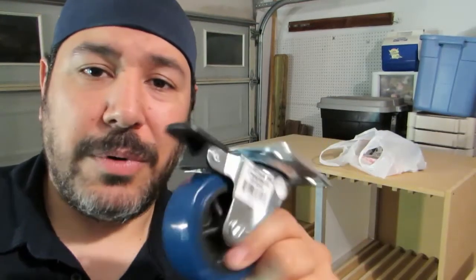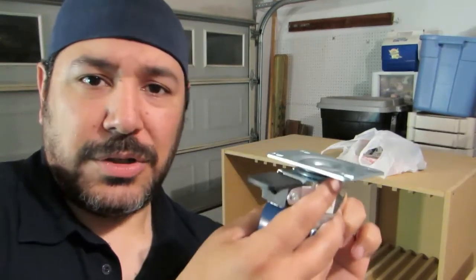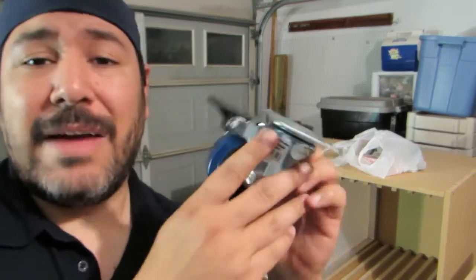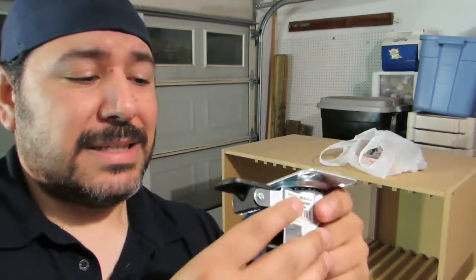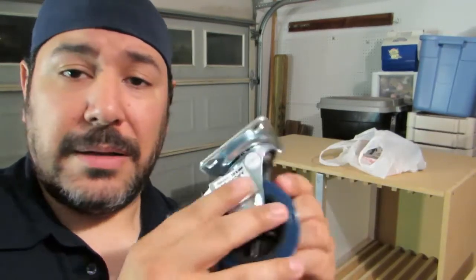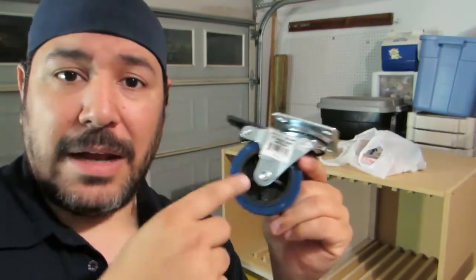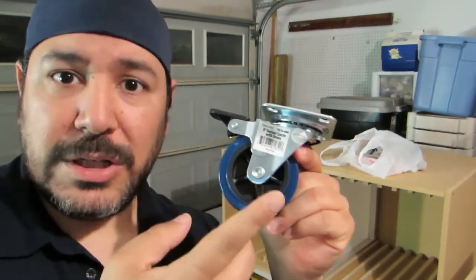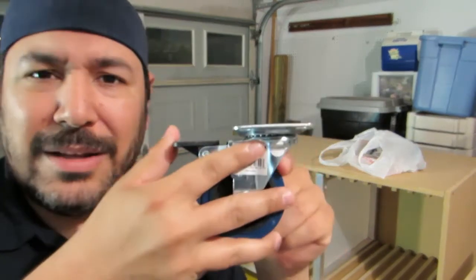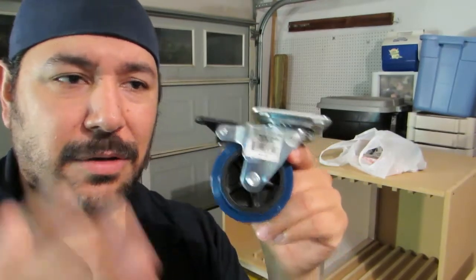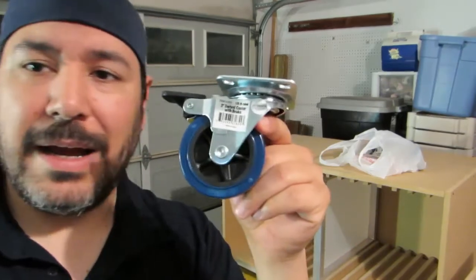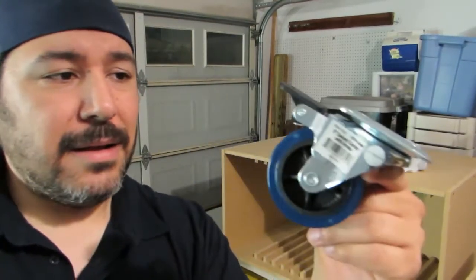You can get these at Lowe's or Home Depot and you're paying five dollars for two-inch or two-and-a-half-inch wheels with no brake. So this is overkill, but hey, for four dollars... The ones at Harbor Freight, the two-inch ones with no brake, were $4.99. These were on sale for $3.99, so I had to get these, especially with the brake on it.